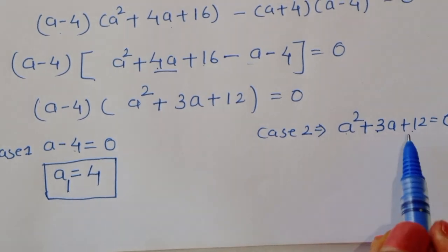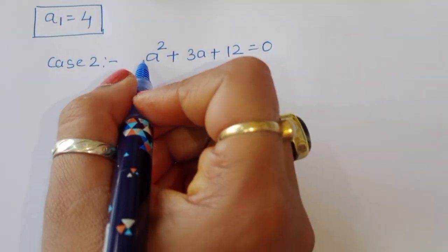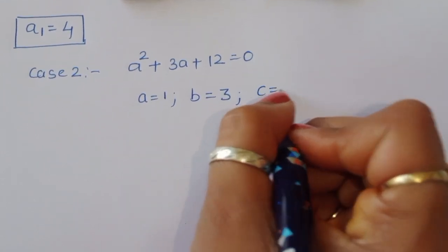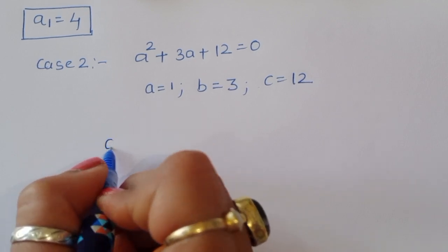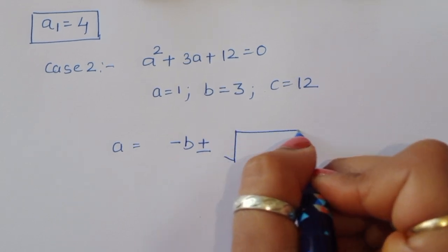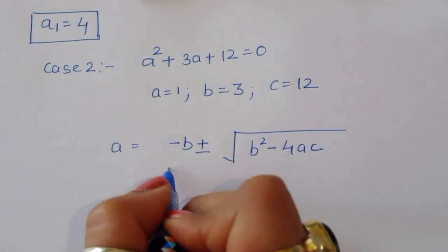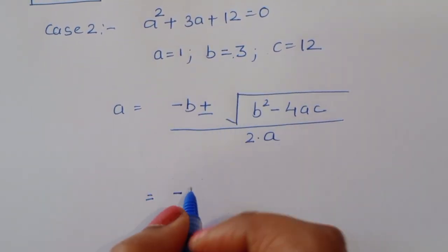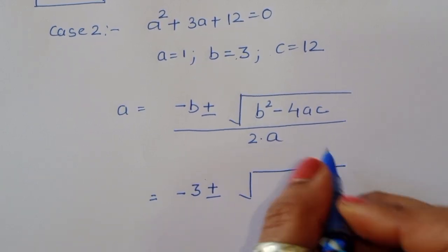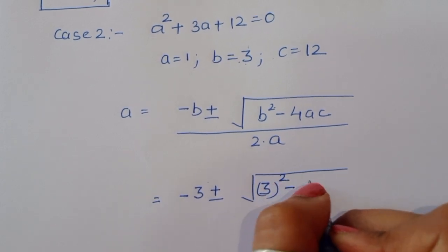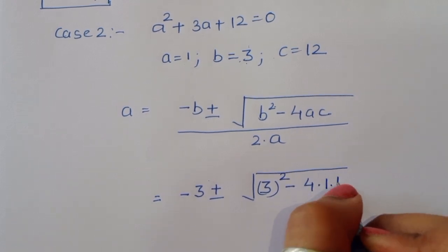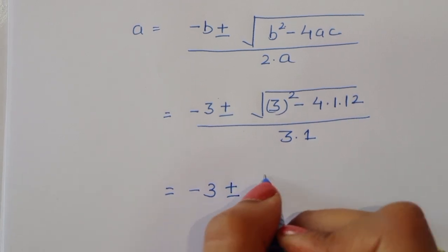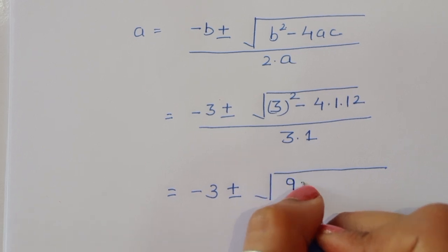For Case 2, a² + 3a + 12 = 0, we use the quadratic formula a = (-b ± √(b² - 4ac)) / 2a. Here the coefficients are: a = 1, b = 3, c = 12. So a = (-3 ± √(9 - 4×1×12)) / (2×1).